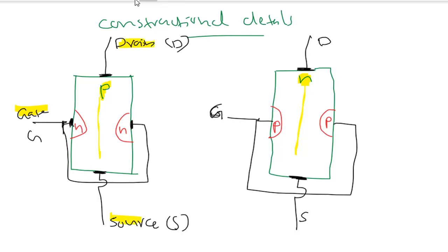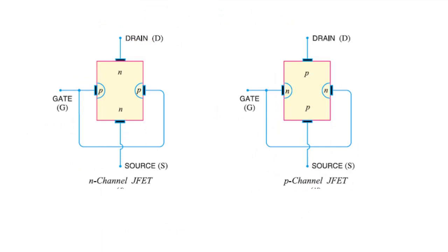A JFET has essentially three terminals: source, drain, and gate. The first one is N-channel JFET, where the channel is N-type and you have two P regions. For P-channel JFET, you have a P region as the channel with two N regions on the sides. These form the gate, drain, and source terminals of the P-channel JFET.